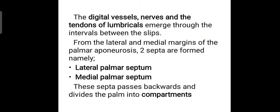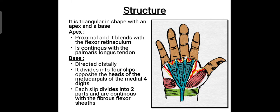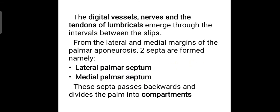The digital vessels, nerves, and the tendons of the lumbricals emerge through the intervals between the slips. From the lateral and medial margins of the palmar aponeurosis, two septa arise — namely the lateral palmar septum and the medial palmar septum. These septa pass directly backwards towards the dorsum of the palm and divide the palm into different compartments. The septa are formed from the medial and lateral margins of the palmar aponeurosis and pass backwards to divide the palm into compartments.